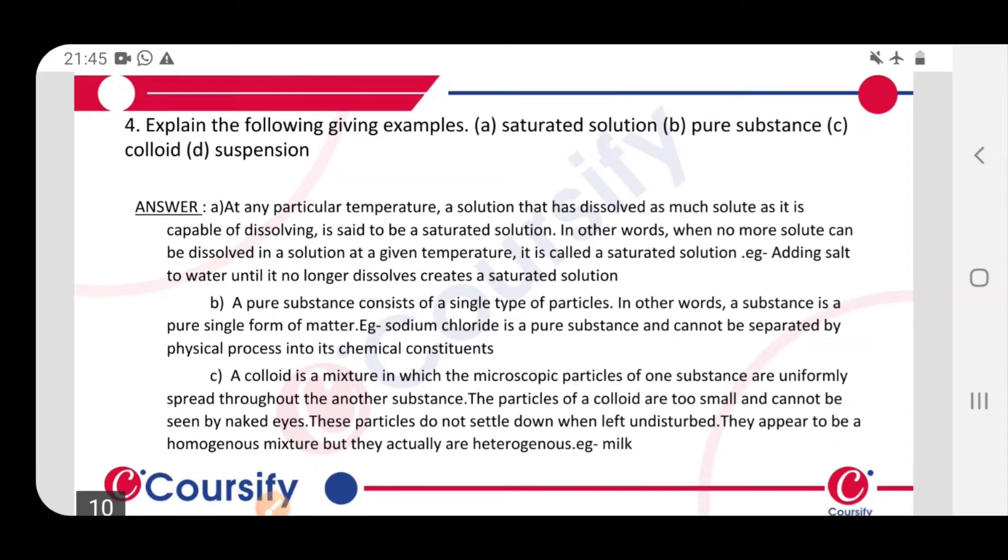Question. Explain the following giving examples: Saturated solution, pure substance, colloid and suspension. Yeh 4 terms ko humay explain kerna hai examples ke saath. Toh pehla question hai saturated solution.